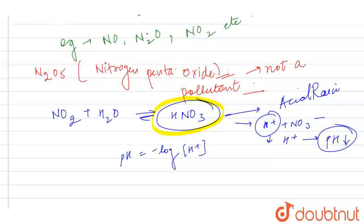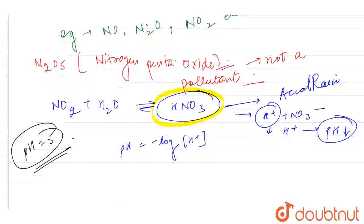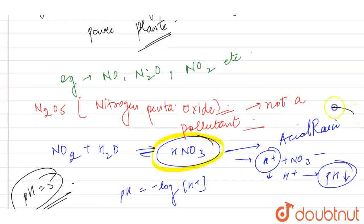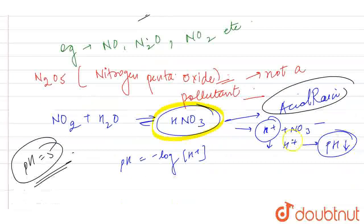In acid rain, the pH of rain water is about 5, which is very harmful for aquatic species, human beings, and monuments. So this is how our nitrogen oxides are so harmful. Thank you.